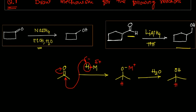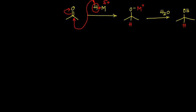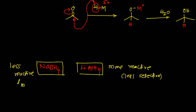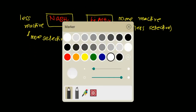In these two reactions, two reagents are given: sodium borohydride (NaBH4) in the first reaction and lithium aluminum hydride (LiAlH4) in the second. Comparing these two, LiAlH4 is the more reactive reagent and is less selective, while NaBH4 is less reactive and more selective.